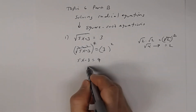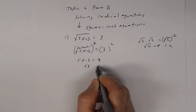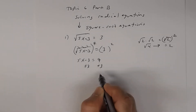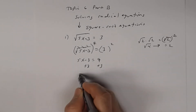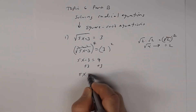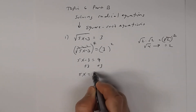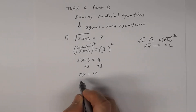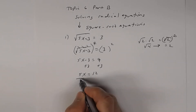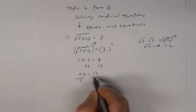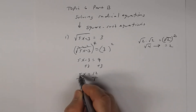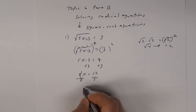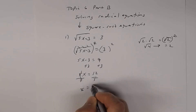Solving for x: I add 3 to both sides to get 5x equals 12, then divide both sides by 5 to get x equals 12 fifths.